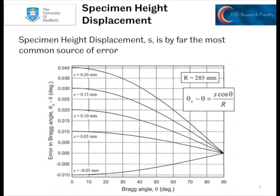The shift in peak position that results from specimen height displacement is given by the equation shown here. What you can see in the graph is effectively five different shifts in peak positions according to different specimen height displacements — only very small offsets, fractions of millimetres, yet we see an observable effect. These would all be shifts of one or two data points to higher or lower positions across the diffraction pattern, which can make your analysis of your X-ray data an awful lot harder. It's always within your control to avoid, so it's really important to try and avoid it — put the sample in the right place.